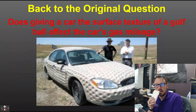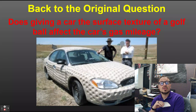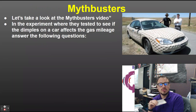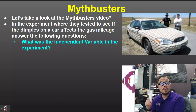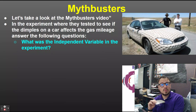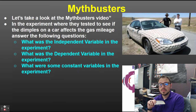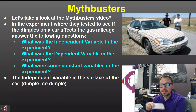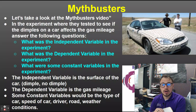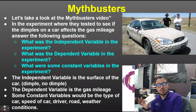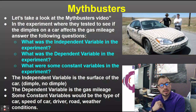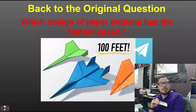Let's look at another example: 'Does giving a car the surface texture of a golf ball affect the gas mileage?' This is from a Mythbusters episode where they tested whether dimples on a car affect gas mileage. The independent variable is the surface texture of the car — smooth versus golf ball dimples. The dependent variable is the gas mileage. Constant variables include the make and model of the car, the speed, the driver, the road, and the weather conditions.